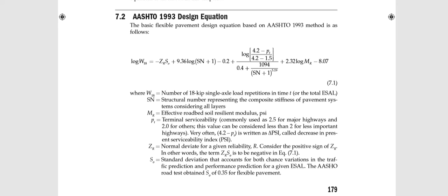One portion of the equation is reliability. S0 is the standard deviation of performance observed in the AASHTO Road Test in Illinois, and Zr is the standard normal deviate — simply a value read from a table based on the reliability level. For example, if you are designing for 90% reliability, you take the normal deviate for 90%. Then there is log SN, where SN is the structural number — the only output from this equation. Everything else is an input.